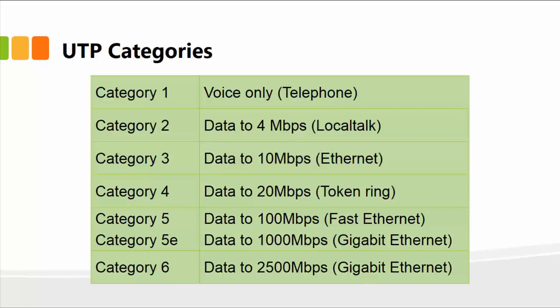They'll cut the cable physically and hand it over to you. Category one is voice only — your telephone lines typically go through category one cable. Category two can handle data up to 4 Mbps, which is megabits per second, and that's just local talk. Cat three can handle up to 10 megabits per second speed, which is also known as Ethernet.